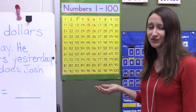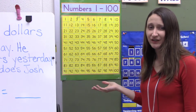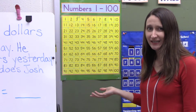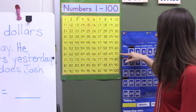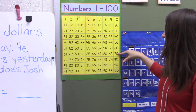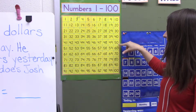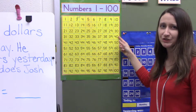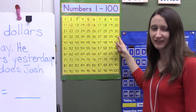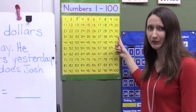I can also use the strategy of counting backwards by 10's. So starting at 70, and I count 10, 20, 30, which also puts me at the answer of 40.